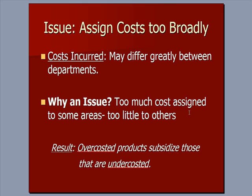We have a challenge which gives us the need for activity-based costing, and the challenge is that we assign costs too broadly to products and services. Why is that a problem? Because costs may differ greatly between departments — one department may be using a lot more of the resource than another. So we may have too much cost assigned to some areas and too little to others.